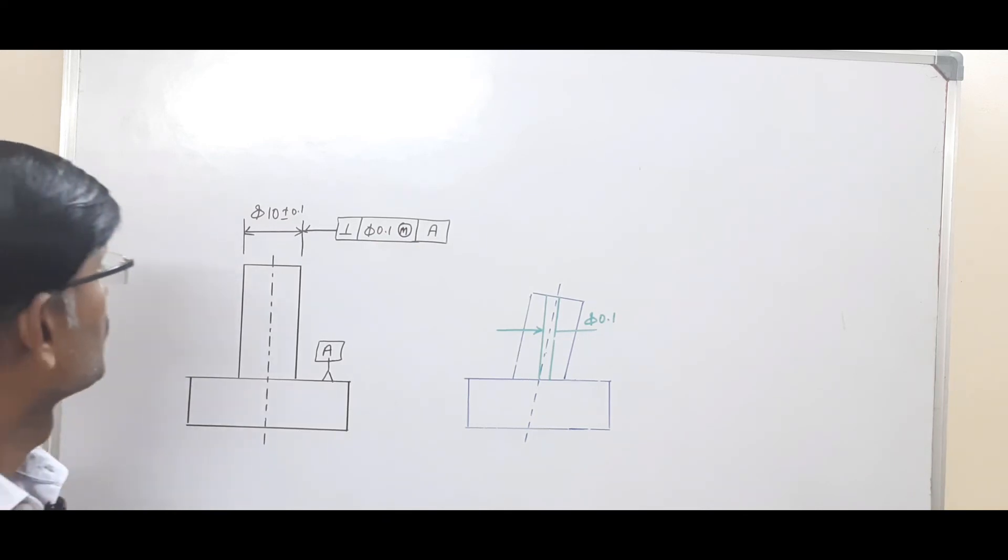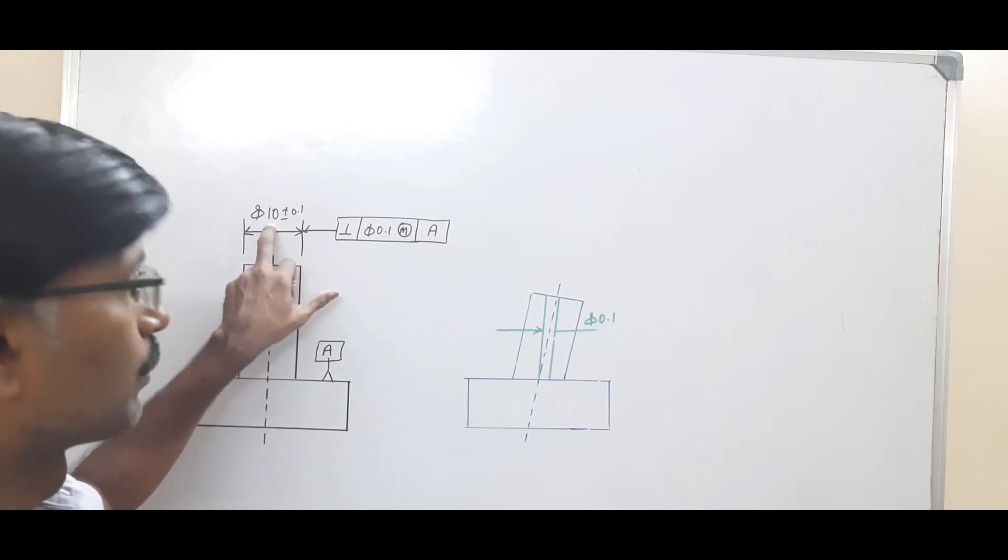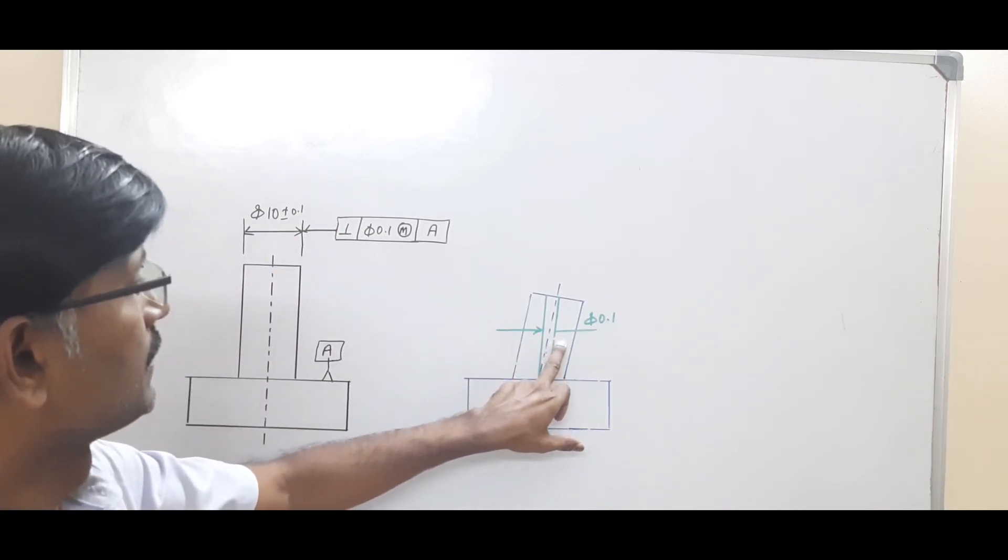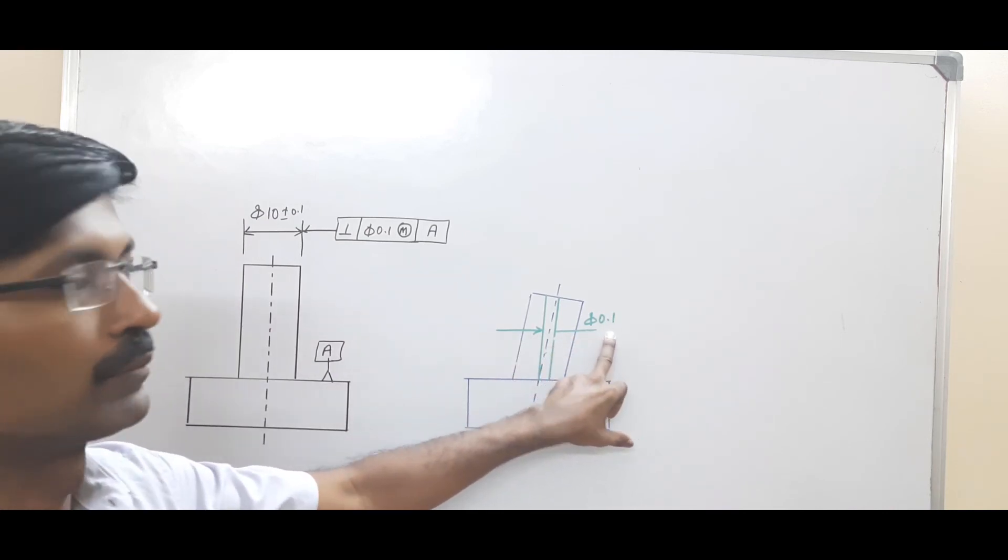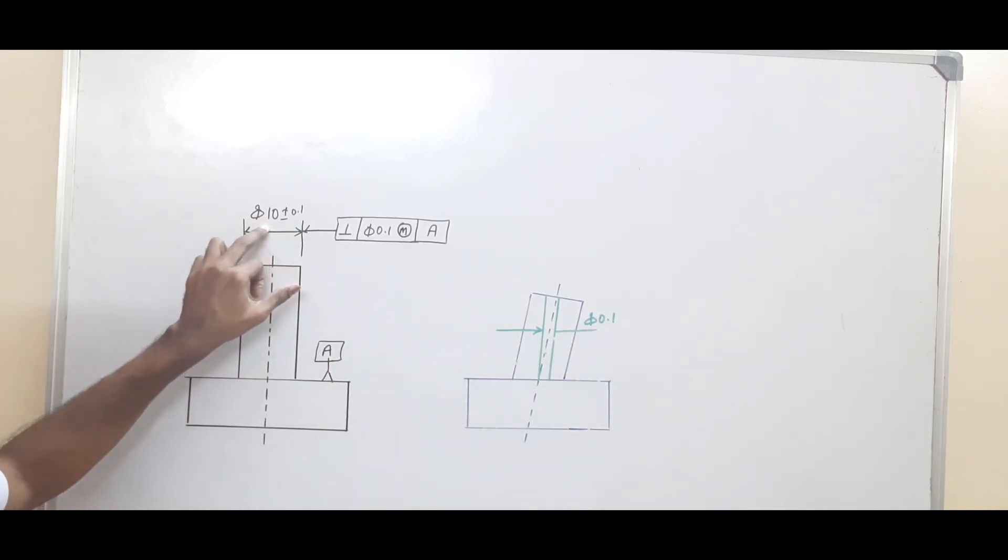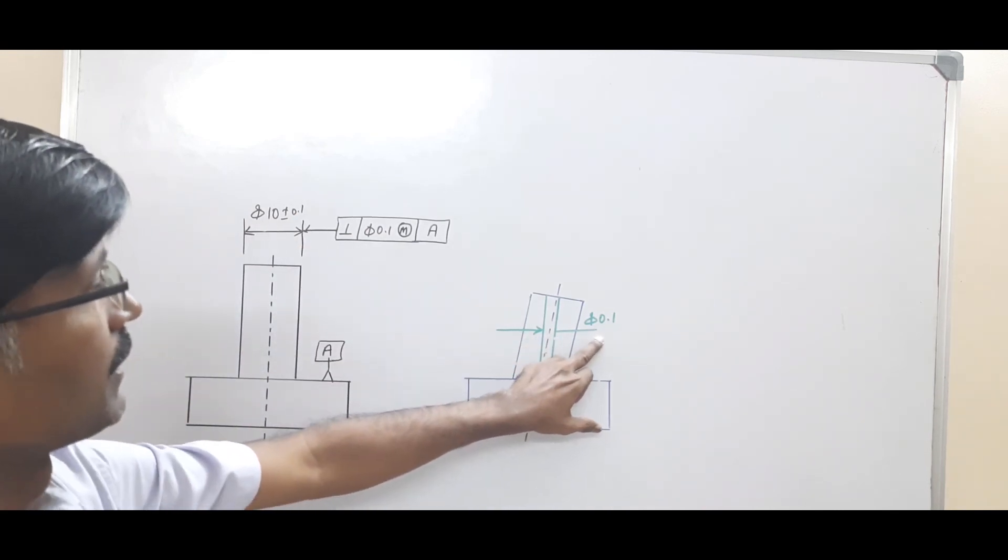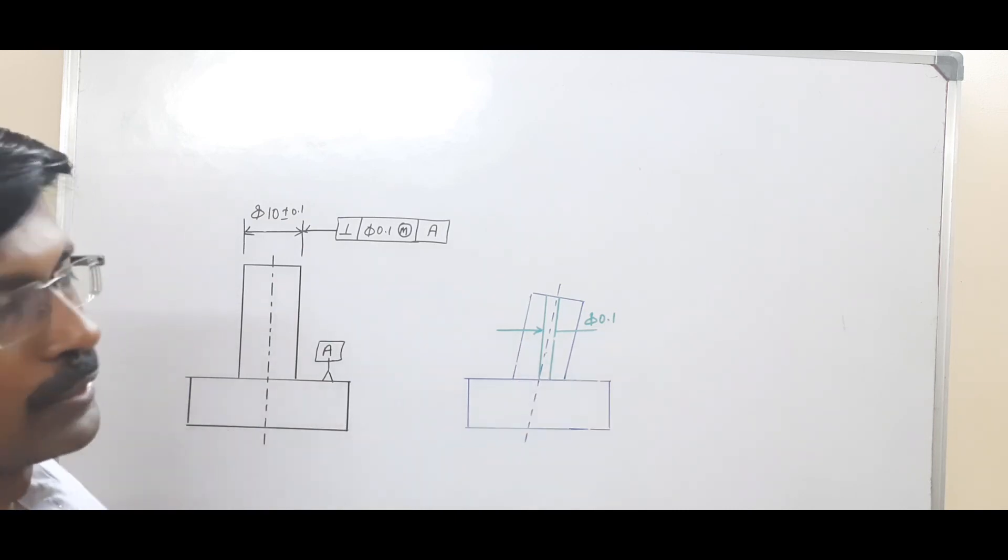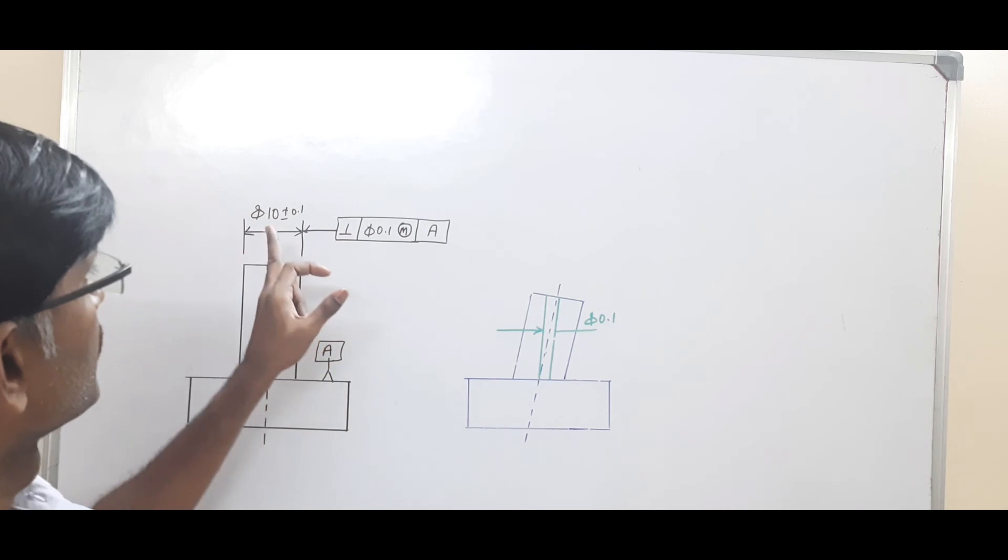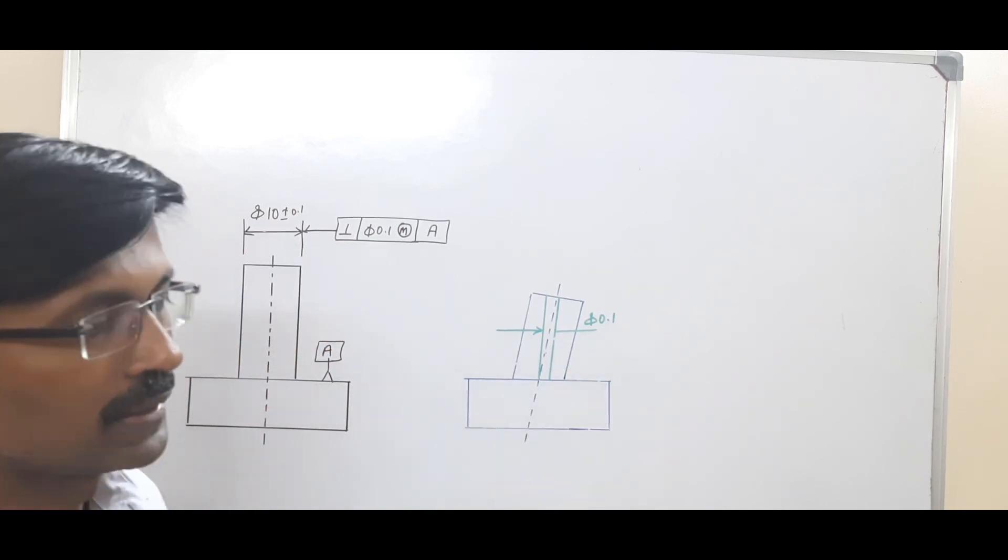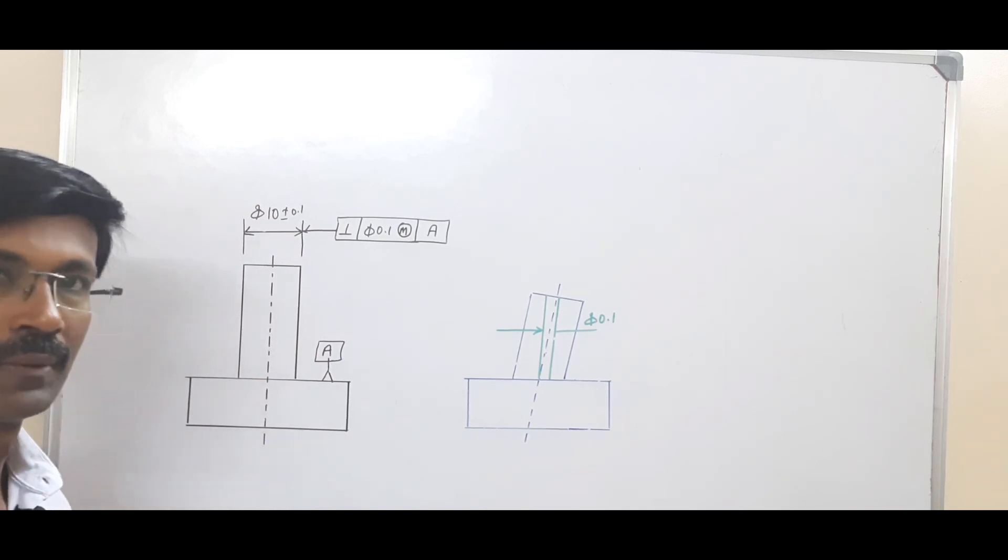So here when the part is produced at 10.1, then the perpendicularity tolerance cylinder should be 0.1. When the part is produced at 9.9, then instead of perpendicularity error 0.1, we will have 0.3. We get 0.2 bonus tolerance. So when the part is produced at 9.9, perpendicularity error allowed is 0.3. This is about perpendicularity.